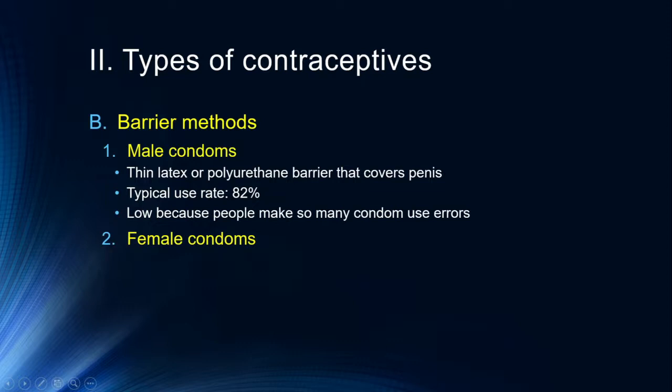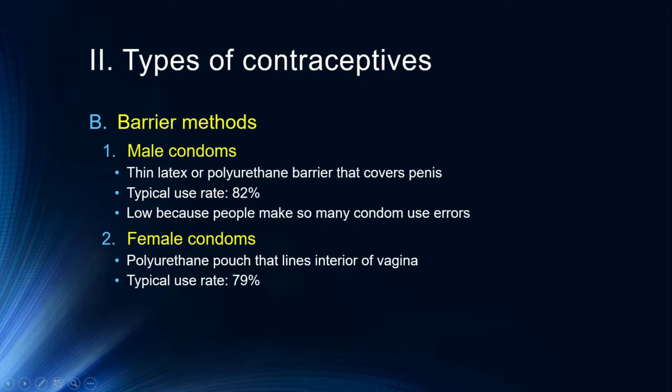Female condoms are a polyurethane pouch that lines the interior of the vagina. Typical use rate is about 80%, and this is a great method for women who are trying to take more control over what might be happening in sexual encounters. These can also be used for anal sex in both heterosexual and homosexual encounters.